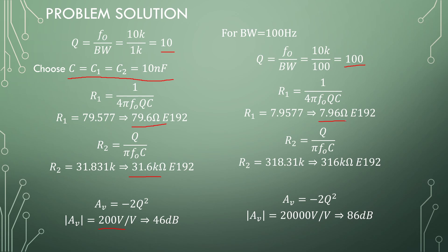The second problem: resistor 1 becomes 7.9577 ohms. You can see the Q factor directly scales these resistors. If we scale resistor 1, we scale the Q factor. Same with resistor 2. This becomes 318.31 kΩ and a gain of 20,000 or 86 dB.